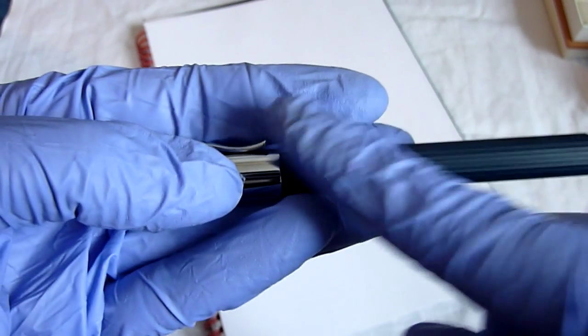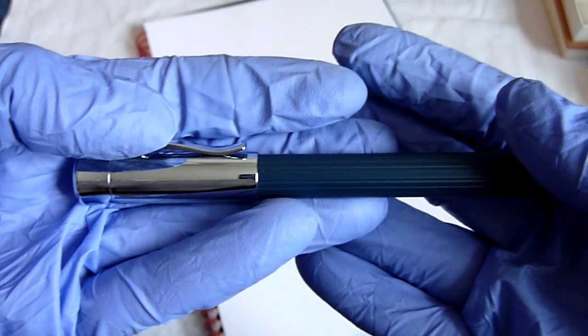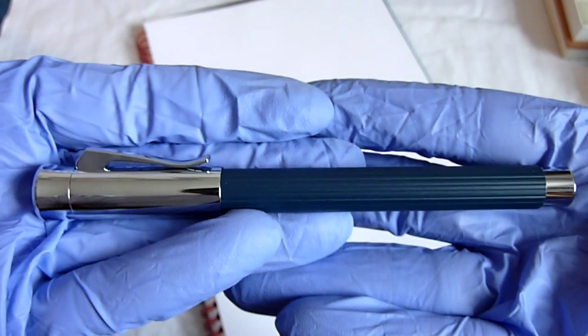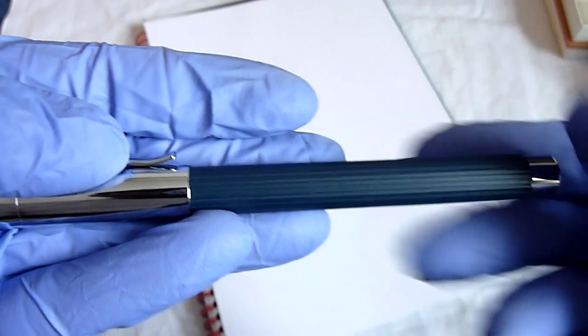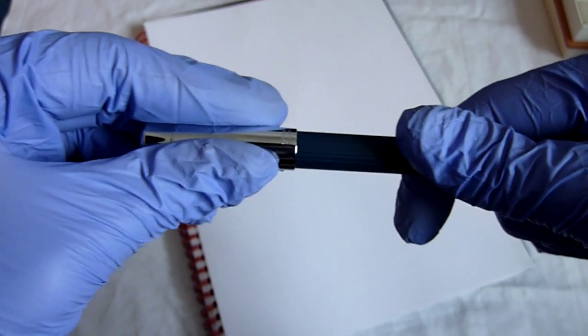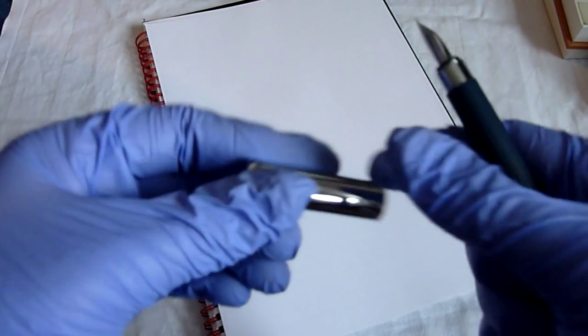So this is the Fountain pen. This is actually all metal, so this is the colour night blue and I absolutely love this colour. So it either can be called night blue or midnight blue but Graf describes it as night blue.